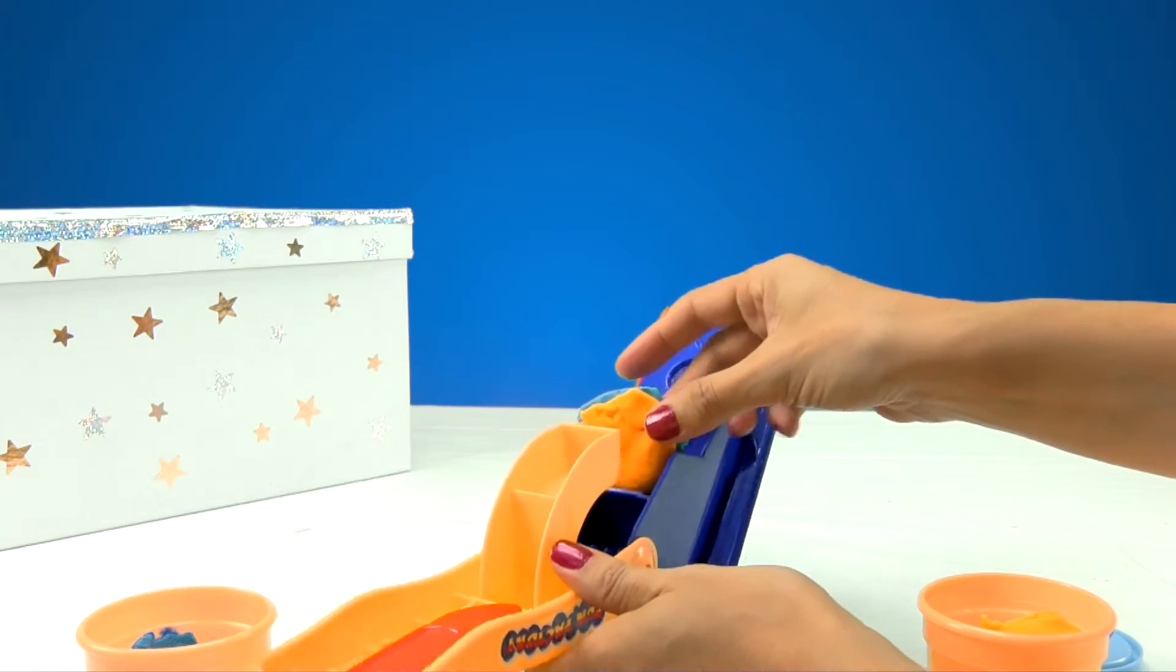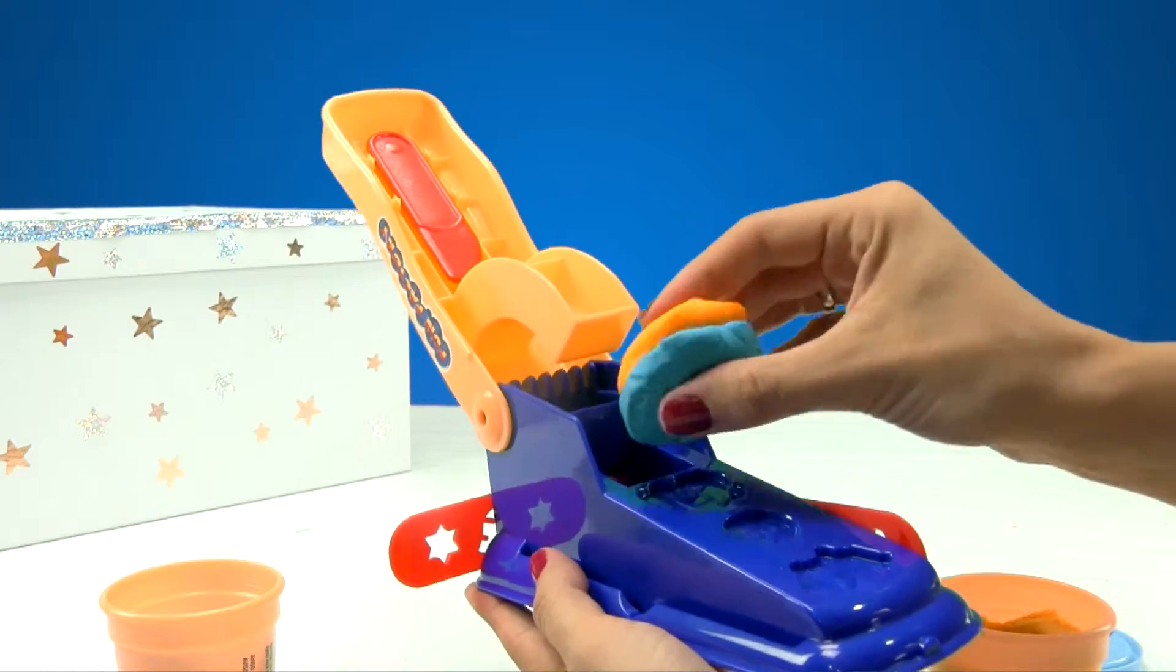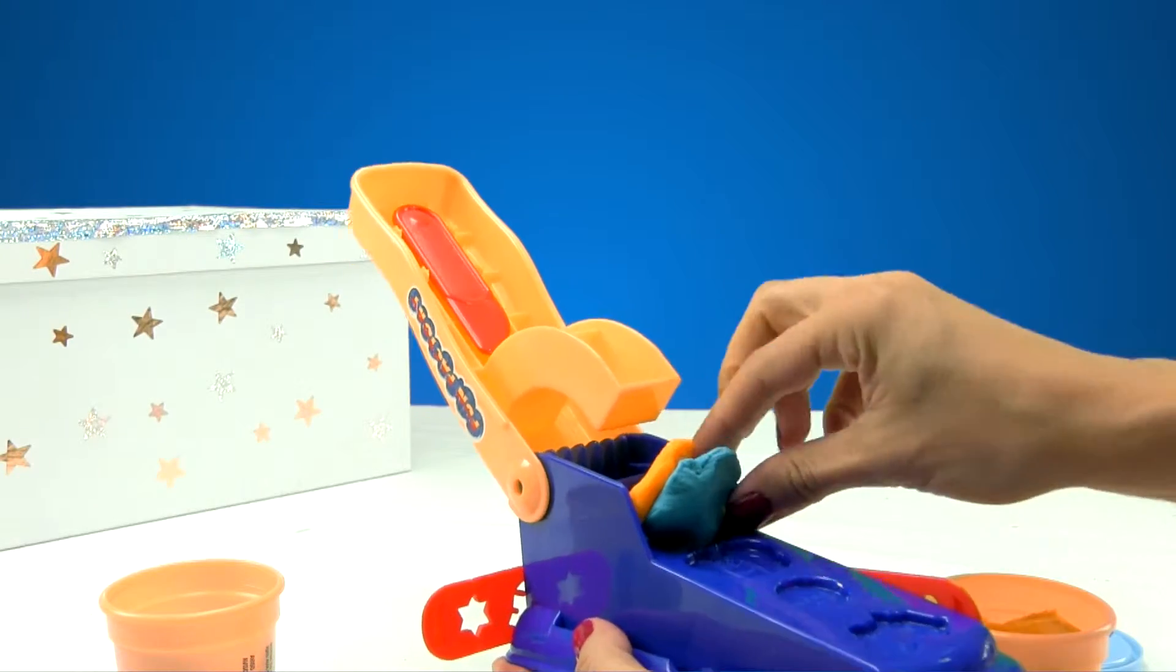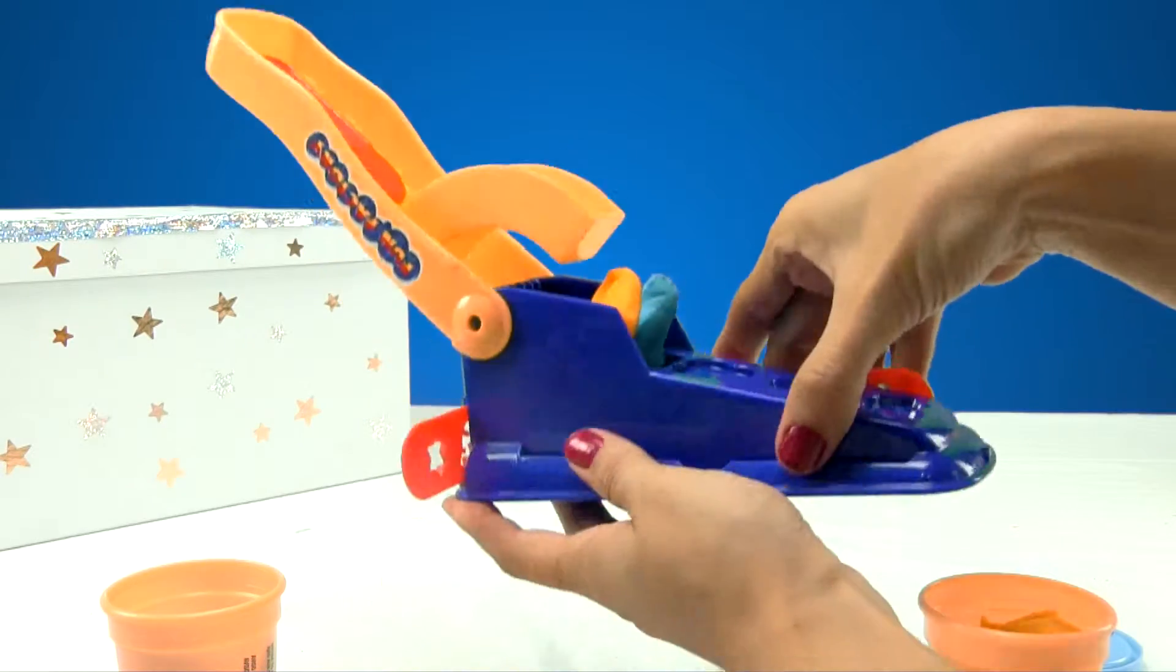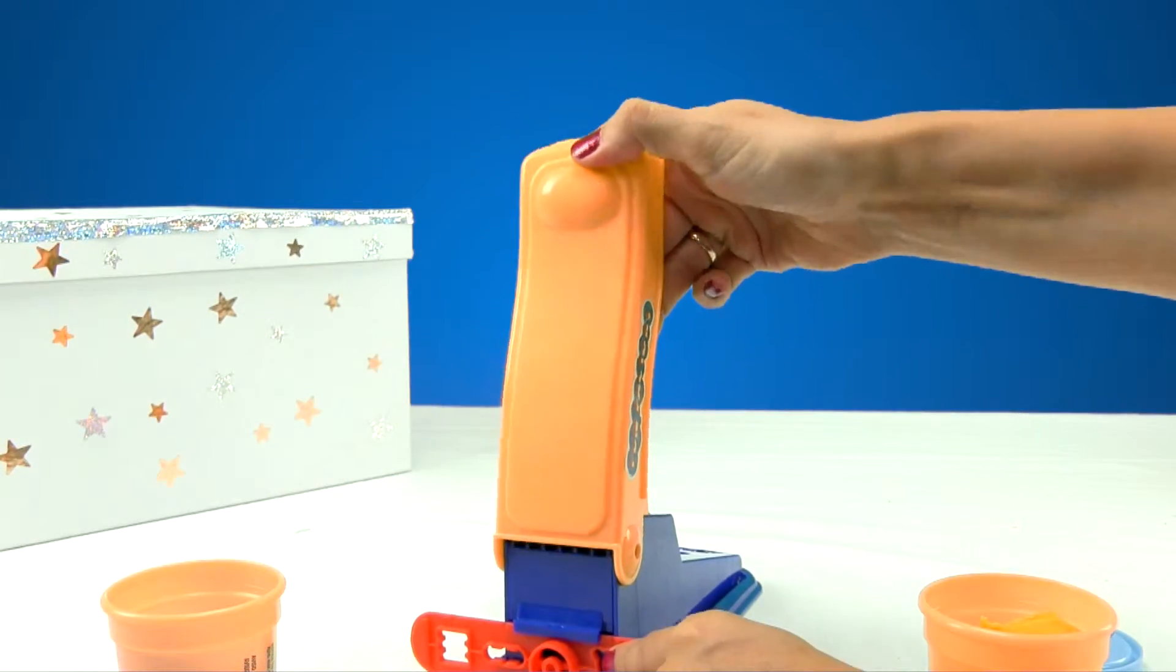And we'll put them just like this side by side. All right. And I think we put it here. Let's turn the machine around so you can see it better. Do you see? We put the Play-Doh right here. It doesn't matter if you squish it a little bit. So now we push it down into the machine.